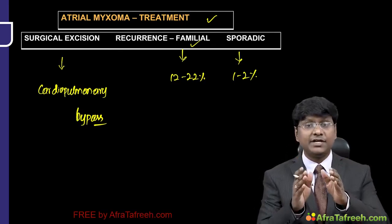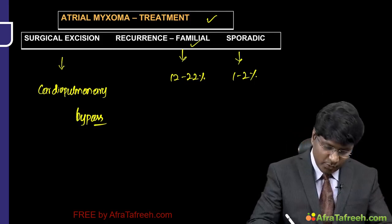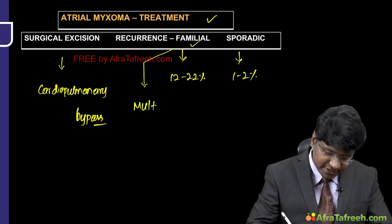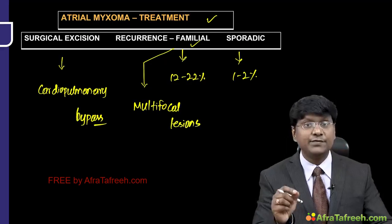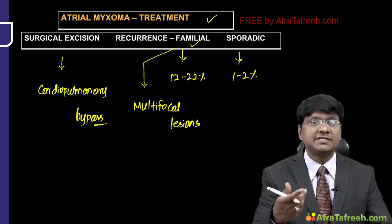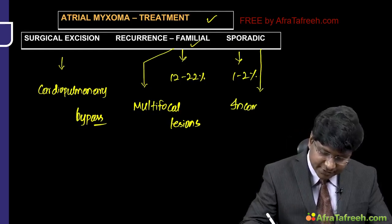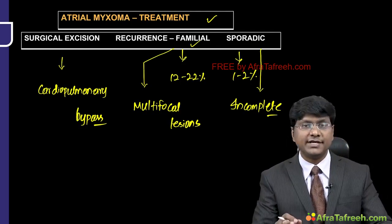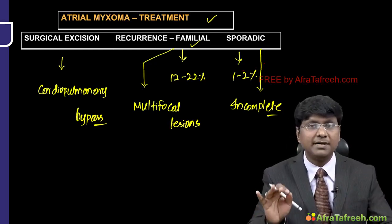The chance of recurrence in familial tumors is high because they have multifocal lesions. In sporadic tumors, recurrence occurs only if resection was incomplete. This concludes the discussion of atrial myxoma — the most common primary benign tumor of the heart.